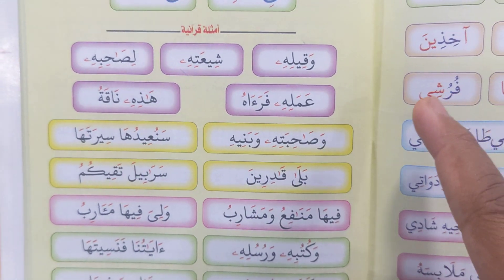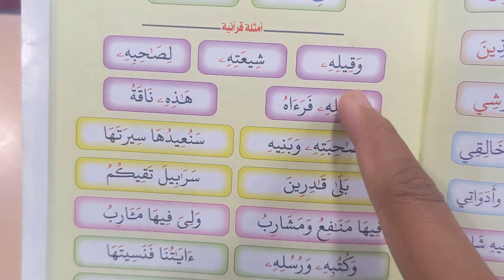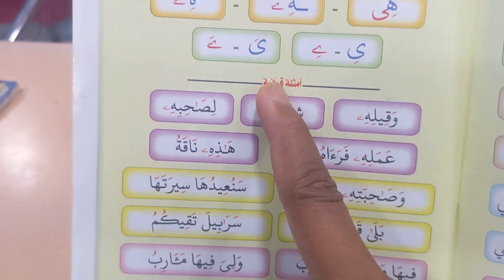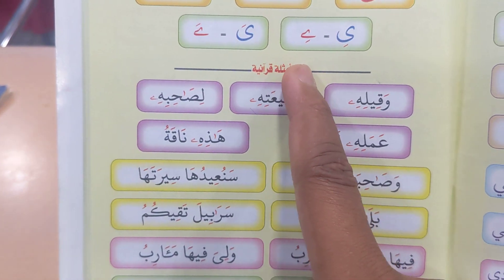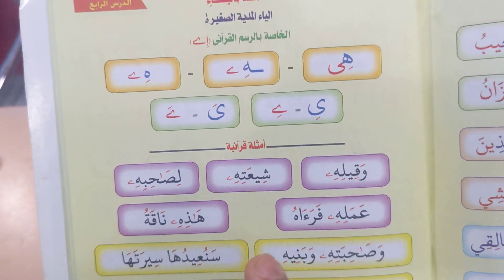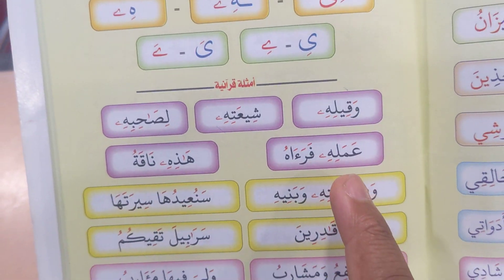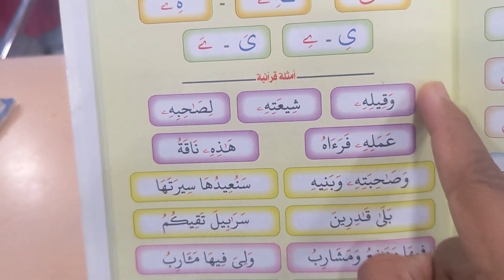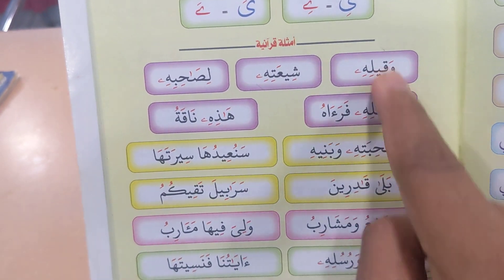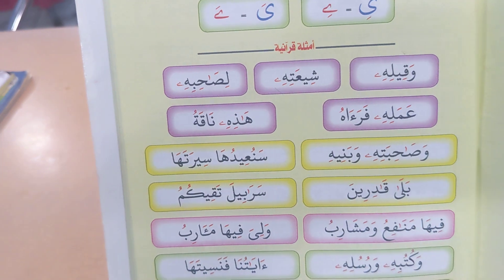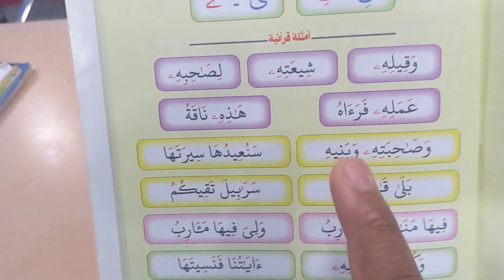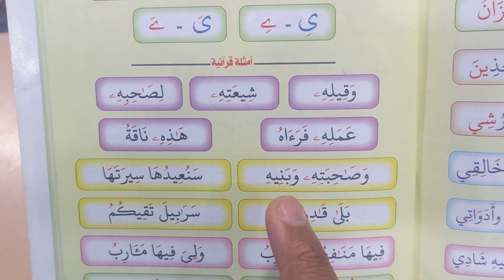Now let's read this section. It says here 'Amthilatul Qur'aniya' — the title meaning 'These are examples from the Qur'an.' If you know how to read this, most of these words you are going to come across in the Qur'an.